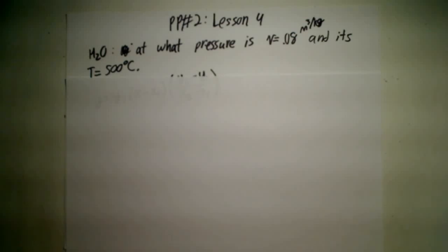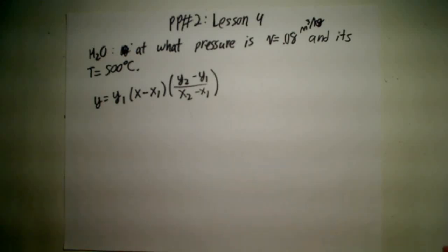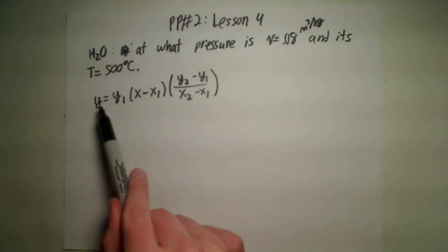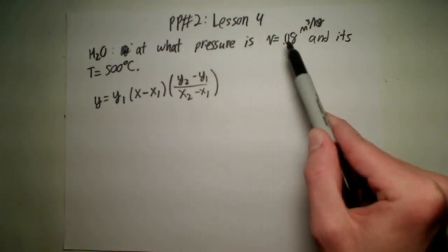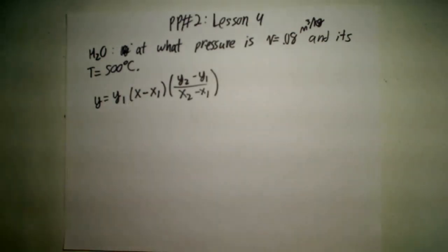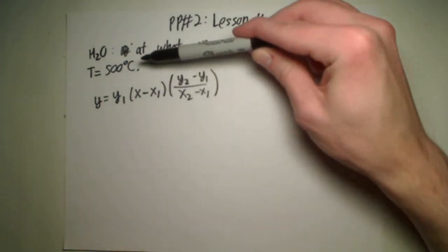So in the last video, lesson number four, I showed you the equation that we use for linear interpolation. We're looking for pressure, so for every y we're going to be using pressure. Either specific volume or temperature is going to be x — it's probably going to be specific volume, since temperature is a little harder in this case. So we're going to look at our tables, and we'll quickly see that it's going to be a superheated vapor because 500 degrees Celsius is a very hot temperature.